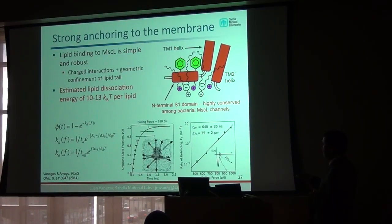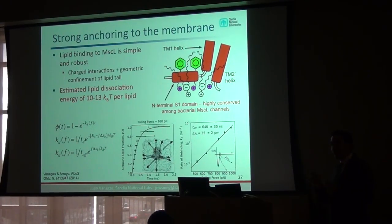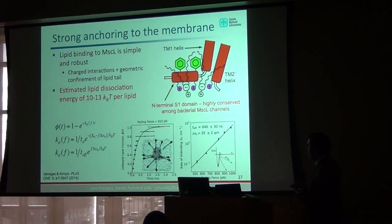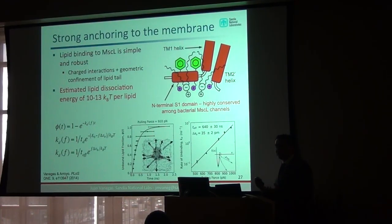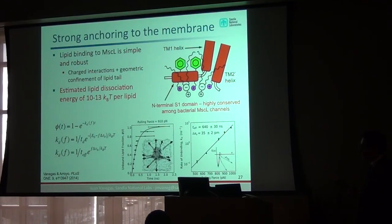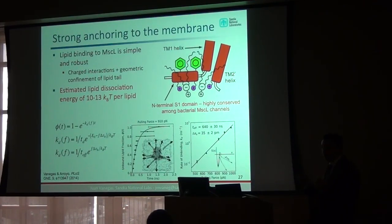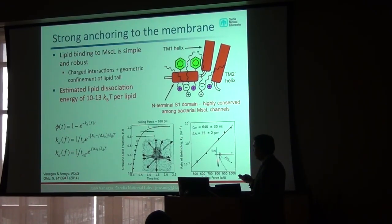We can estimate the energetics of this interaction using a simple Arrhenius-Bell model. Looking at our membrane protein system from the top, we apply pulling forces to get the lipids out of the protein and look at the unbound lipid fraction over time. We obtain the parameters of the Arrhenius-Bell model and estimate around 10 to 13 kTs per lipid for the energetics of this association. This is relatively large — we have about two lipids per monomer, five monomers, so ten lipids tightly associated to the channel.